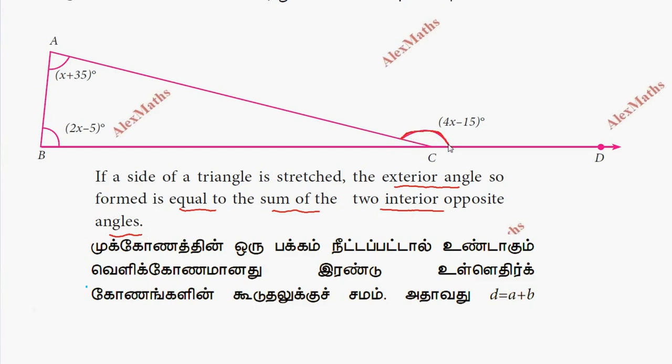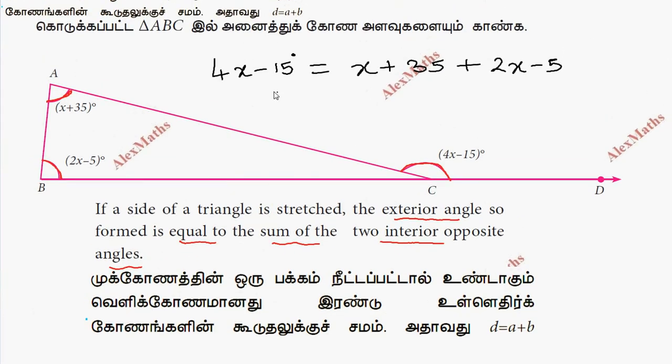4x minus 15 degrees is equal to the sum of the interior opposite angles. Applying the rule, 4x minus 15 equals x plus 35 plus 2x minus 5.